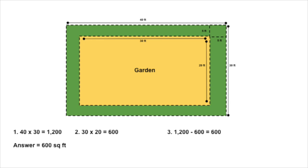The outer edge is 40 feet by 30 feet, which multiplies to a grand total of 1,200 square feet. The garden in the center is 20 feet by 30 feet, which multiplies out to 600 square feet. So we just subtract 600 square feet of the garden from the total of 1,200 square feet, and we get 600 square feet. In this case, the border is the same area as the garden itself.